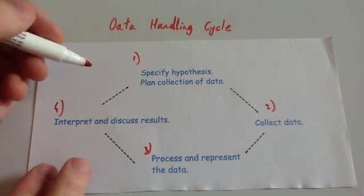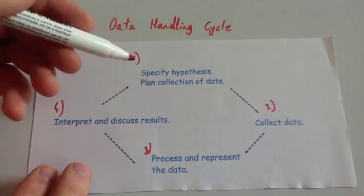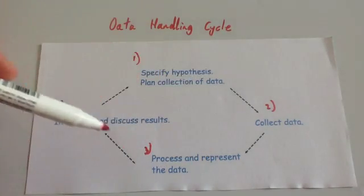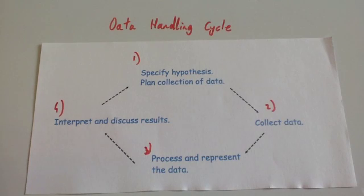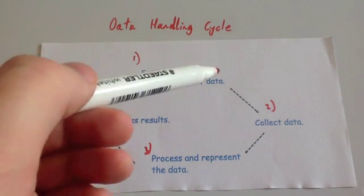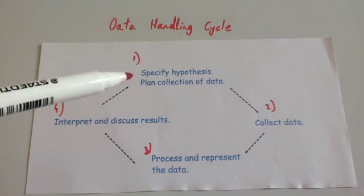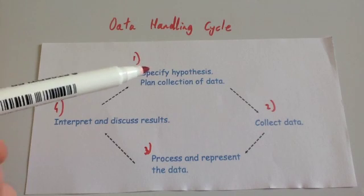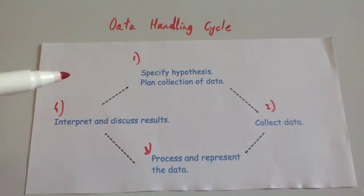If needs be, step five then would be to refine the hypothesis and to repeat it. So for instance, you might find whenever you do your calculations that there's not much difference between the teenage boys and girls reaction times, but you might find that there seems to be an indication that with adults, men have a faster reaction time than women. And what you might then want to do would be to state a new hypothesis. So adult men have faster reaction times than adult women, and then to repeat the whole thing.